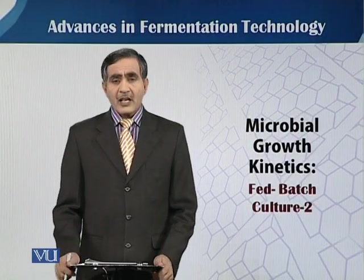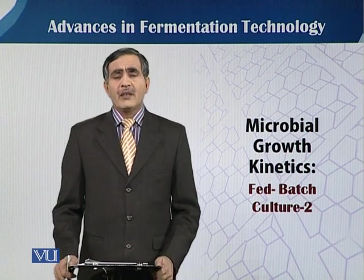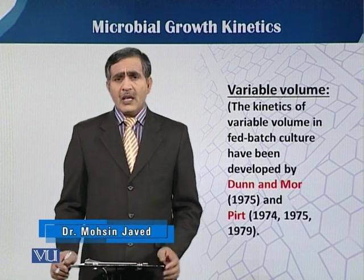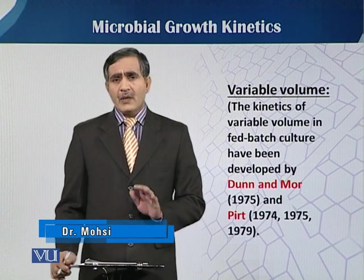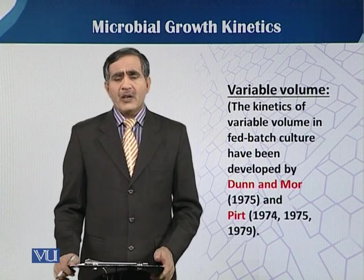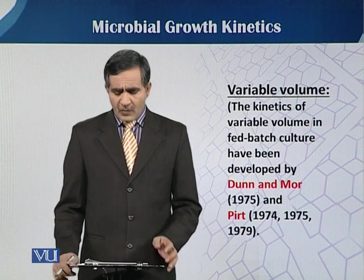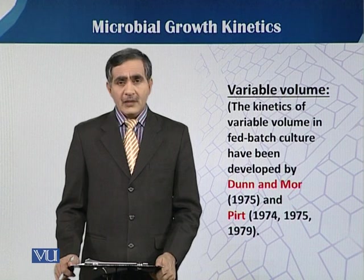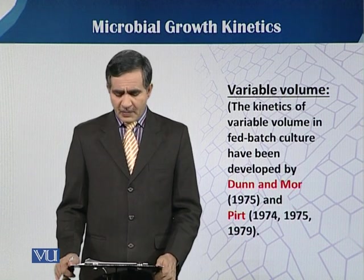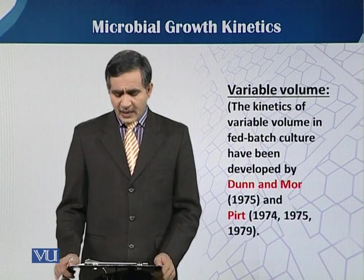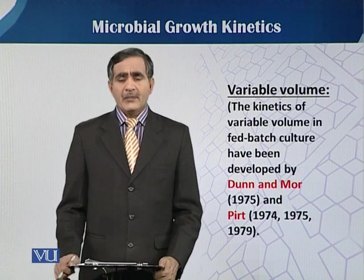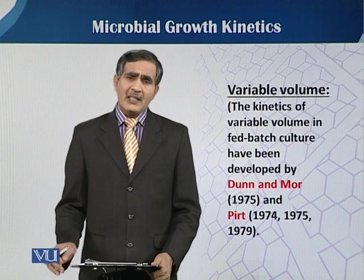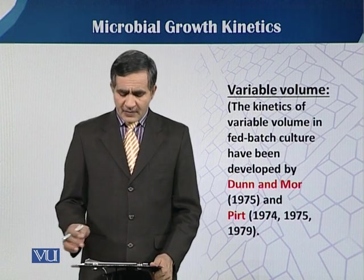In this module we will talk about the kinetics of fed batch culture. Fed batch has two strategies: one with variable volume and other is fixed volume. The kinetics of variable volume were discussed in detail by different scientists, as reported by Dunn and Moore in 1975, and Pirt who published his research work in 1974, 1975, and 1979. We will discuss in detail with respect to Pirt 1975 and 1979.